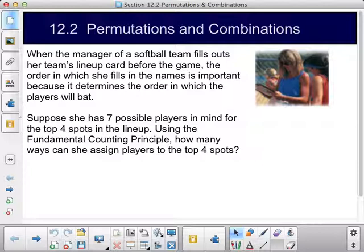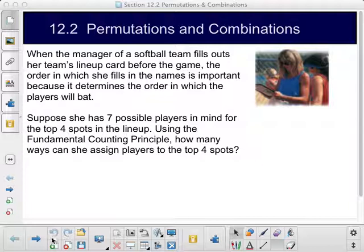So let's look at this first example. When the manager of a softball team fills out her team's lineup card before the game, the order in which she fills in the names is important because it determines the order in which the players will bat. Suppose she has seven possible players in mind for the top four spots in the lineup. Using the fundamental counting principle, how many ways can she assign players to the top four spots?